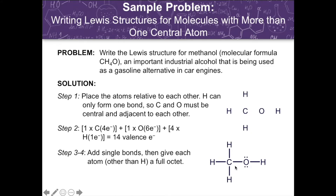The single bonds added represent 2 electrons each. Since we still have 4 electrons remaining, we add them in pairs to fill each valence level. Carbon already has an octet, and each hydrogen shares 2 electrons with carbon. The remaining 4 electrons form 2 lone pairs on oxygen to give the Lewis structure for methanol. Counting the electrons surrounding oxygen — 2, 4, 6, 8 — it satisfies the octet rule.